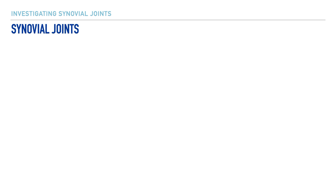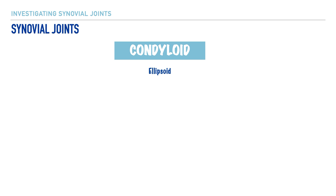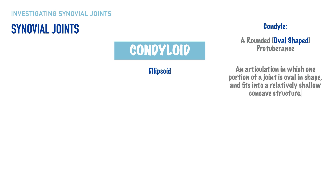Next up is a condyloid joint, also known as an ellipsoid joint. The term condyloid brings to mind the anatomical landmark condyle, which is a rounded or oval-shaped protuberance, and this helps us remember that a condyloid joint will also have a rounded structure as part of its articulation. A condyloid joint is one that has a rounded or oval-shaped structure that fits into a relatively shallow concave structure, and because of that shallow concave structure, there are some limitations to the amount of movement that can take place.